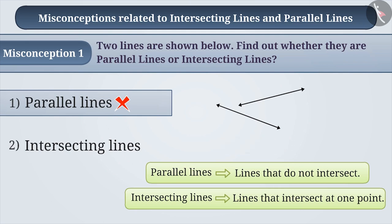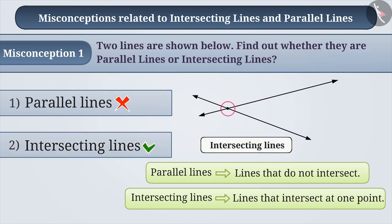The correct understanding is that the lines can be extended on both sides. The lines in the figure do not appear to intersect but if extended, they will appear to intersect at one point. Therefore, both lines are intersecting lines. That is, option 2 is the correct answer.